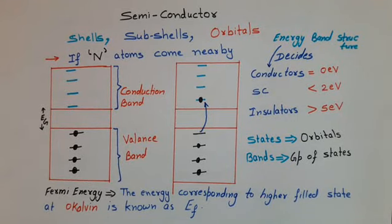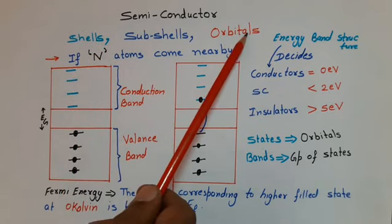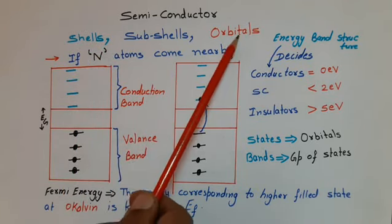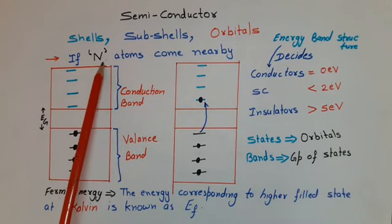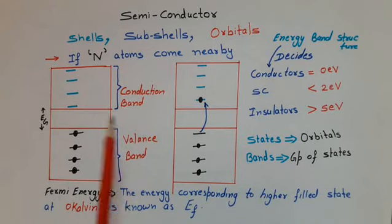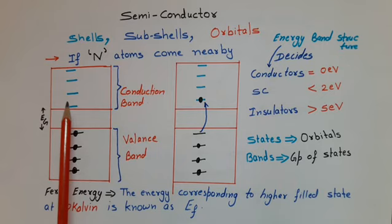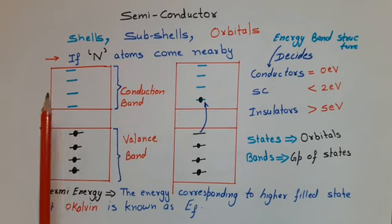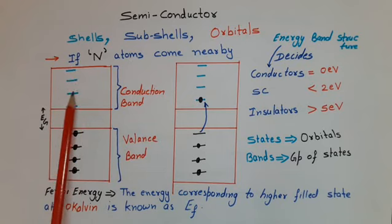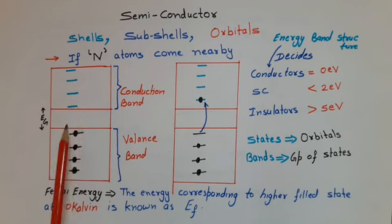If we recall our first lecture on chemical bonding, we know an atom has shells, subshells and orbitals, and electrons stay in those orbitals. When N such atoms of a material come closer, then due to mutual interaction some orbitals start filling with electrons completely — generally the orbitals of inner shells — and some orbitals of outer shells remain vacant. Each orbital corresponds to an energy state and a group of these states is known as a band.